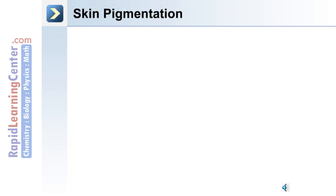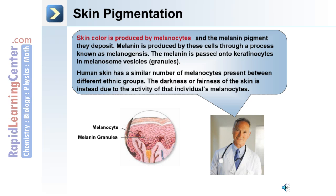Skin color is produced by melanocytes, because melanocytes produce the pigment melanin. Melanin is produced through a process known as melanogenesis, and the melanin is passed onto keratinocytes in vesicles called melanosome granules. The human skin has a similar number of melanocytes present between different ethnic groups. The difference between dark or fair skin is instead due to the activity of the individual's melanocytes.